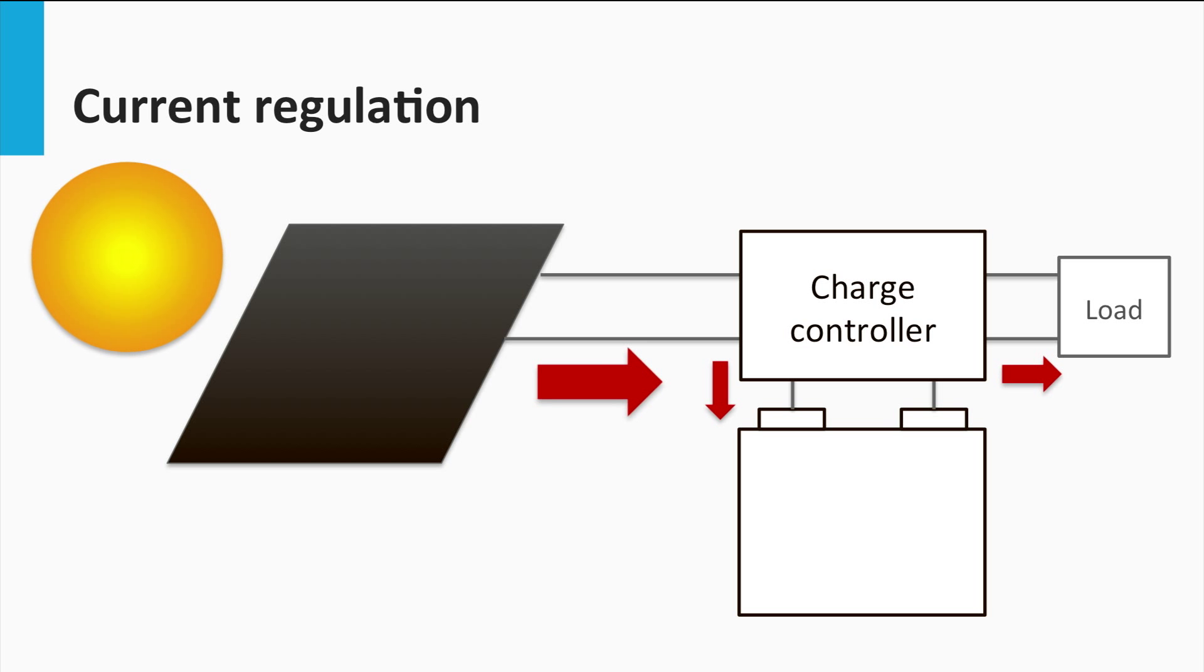With proper current regulation, the charge controller is also able to control the C rates. At the very least, the charge controller can impose the limits on the maximum allowable currents flowing into and from the battery.